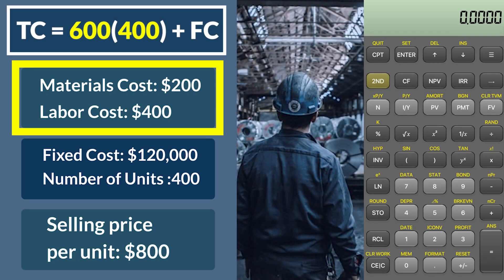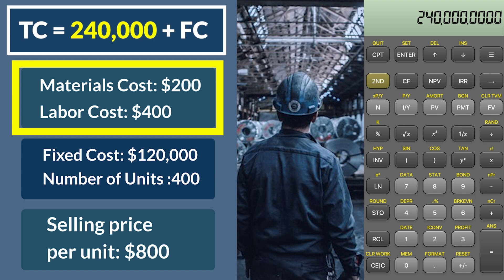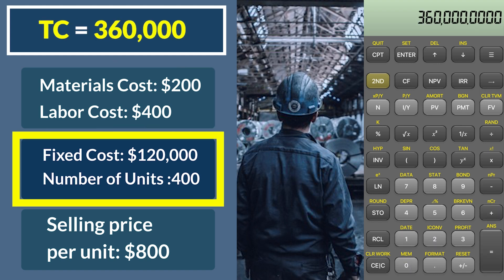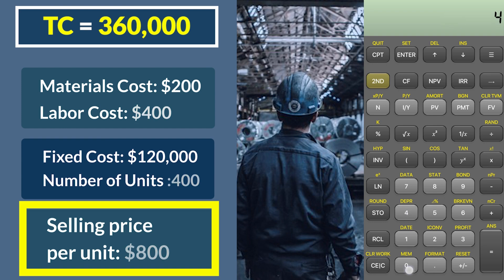From an economies of scale perspective, our labor and material cost per unit is still $600. Multiplying $600 by 400 units gives us $240,000 in variable costs. Adding the $120,000 fixed cost gives us $360,000 in total cost. Selling 400 units at $800 each gives us $320,000 in revenue. Close, but it doesn't quite hit the mark — we're still $40,000 in the red. We're not increasing price, so the only option is to utilize economies of scale and produce more units.